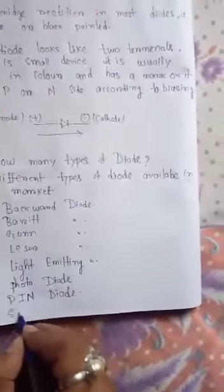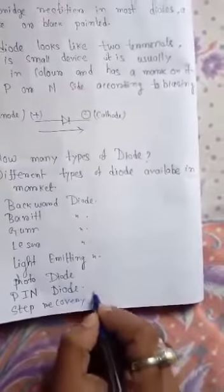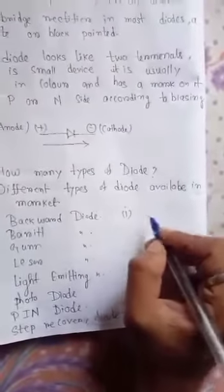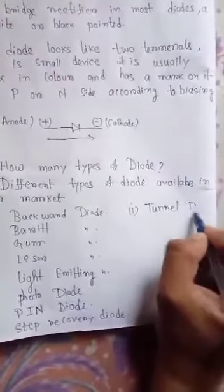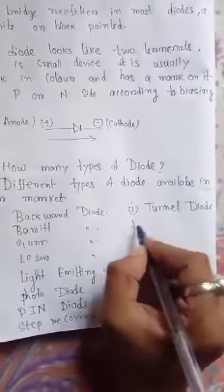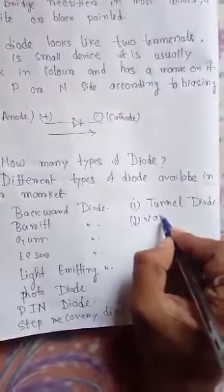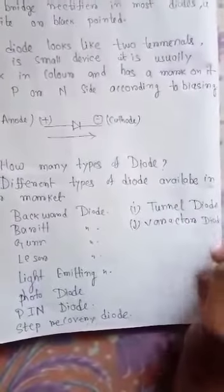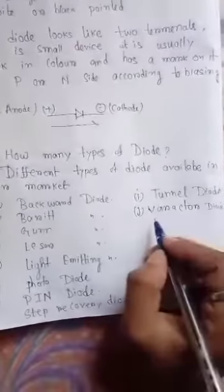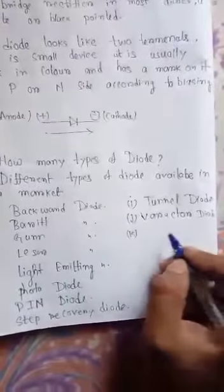Step recovery diode. I. Tunnel diode. J. Veracota diode — this diode is also used in our remote controlling system. Last, Zener diode.